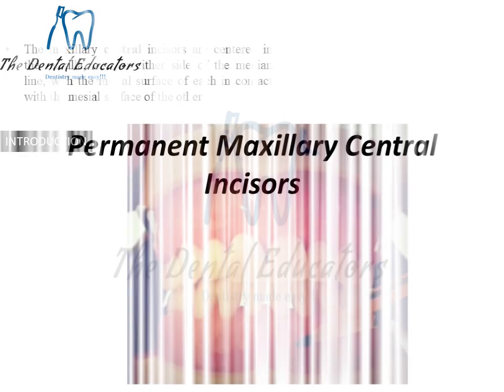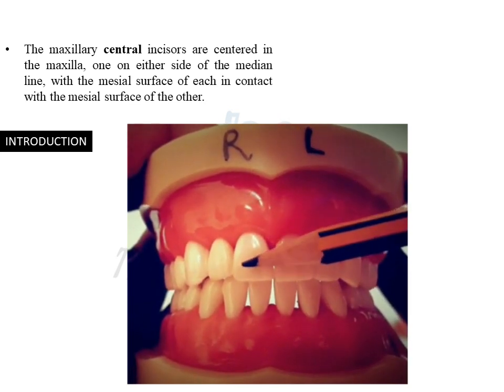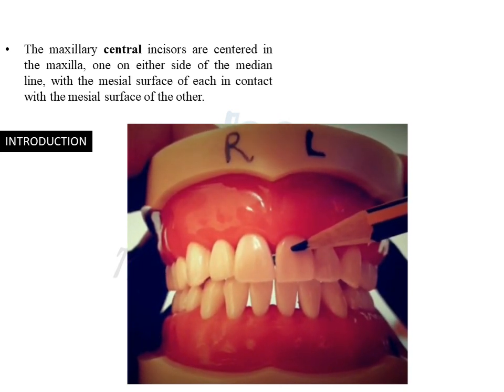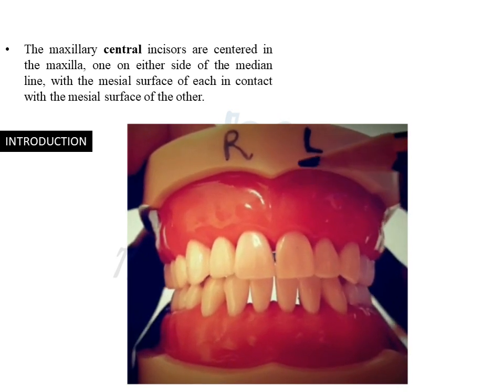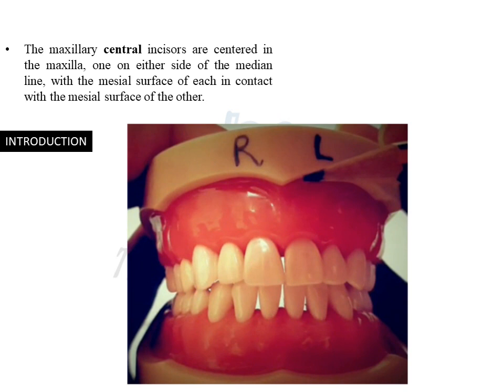The permanent maxillary central incisors are centered in the maxilla on either side of the midline. We have one upper right maxillary central incisor and one upper left maxillary central incisor. Both central incisors are in contact with each other and share a mesial surface — a distinct feature seen only for the maxillary central incisors and the mandibular central incisors.